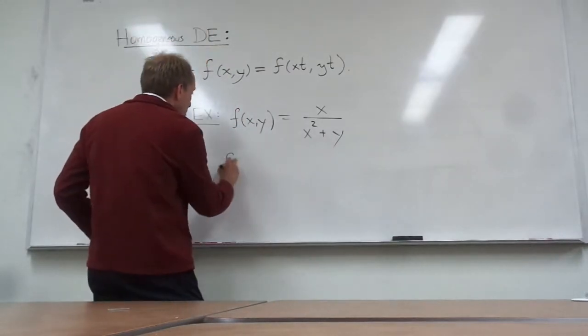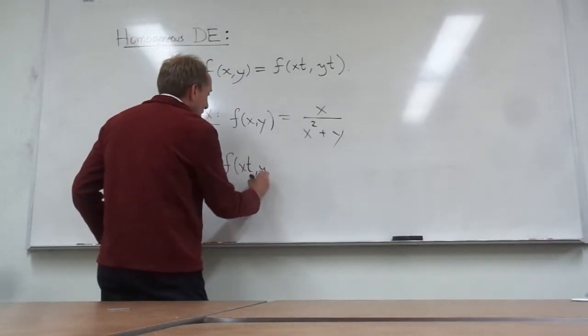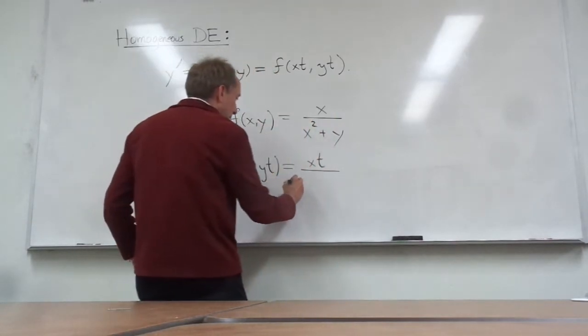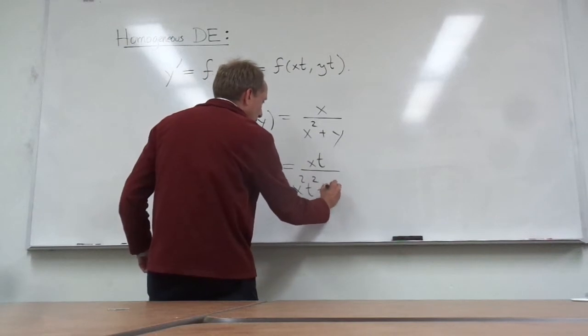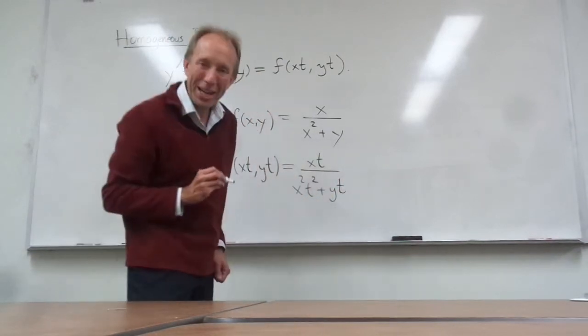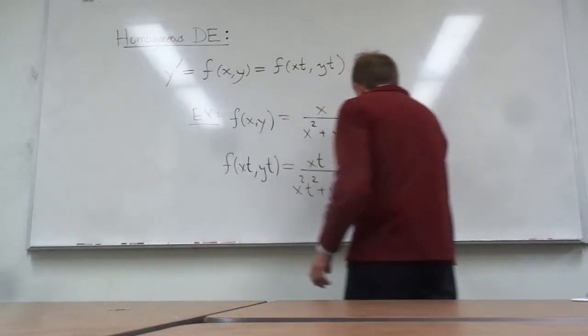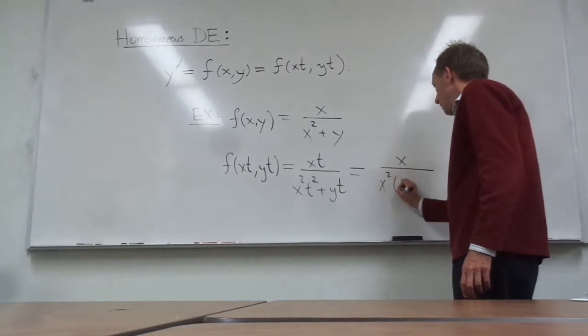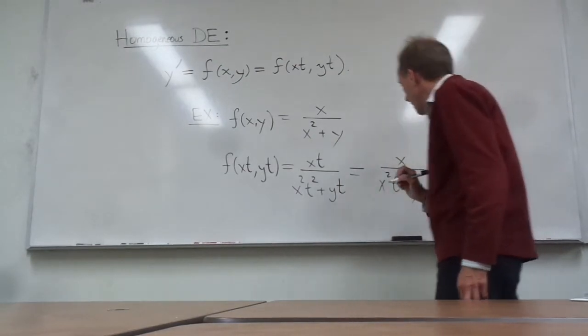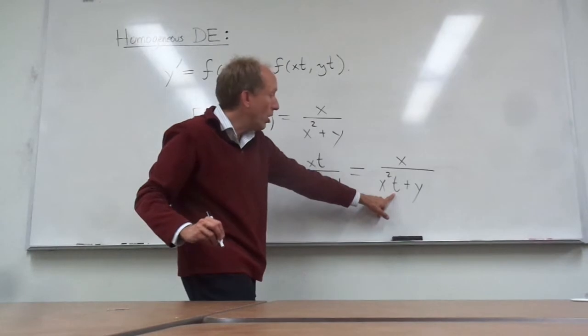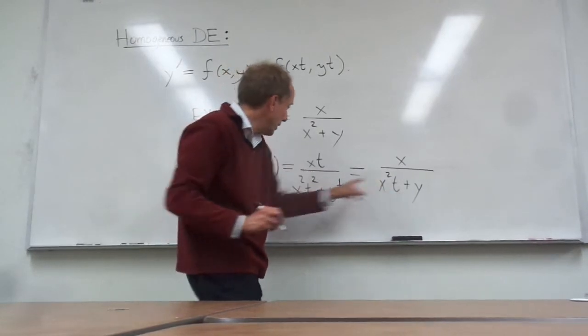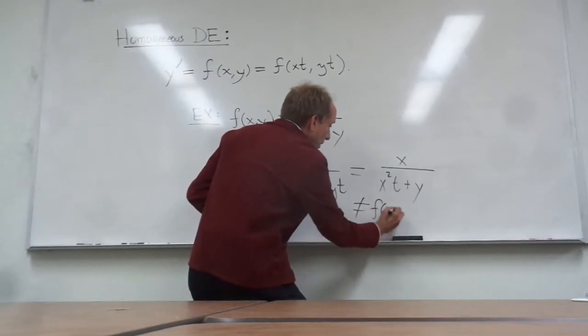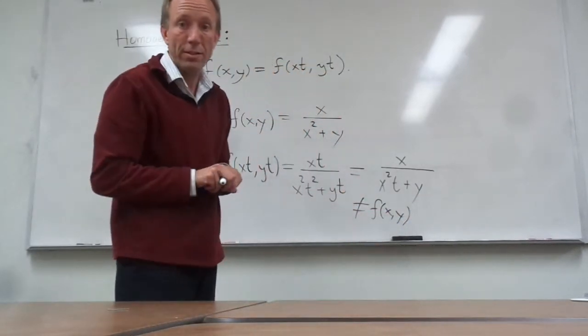Now, if you attach a t next to every single x and every single y, we'll have xt on the top, x squared t squared plus yt on the bottom. And what you'll notice is that while you can factor and cancel one of the factors of t from the top and the bottom, you cannot get rid of all of the t's here. There's still an extra t because this is t squared right here. So this is not f of x, y. This one would not be homogeneous.